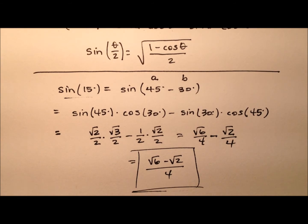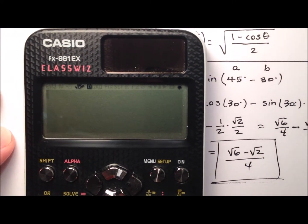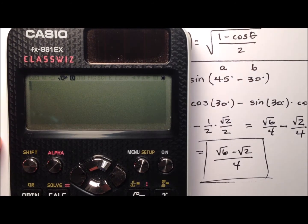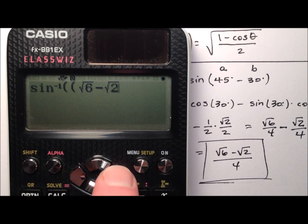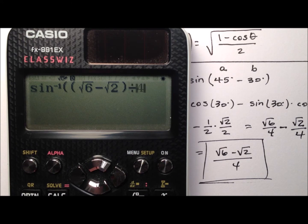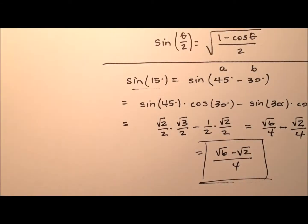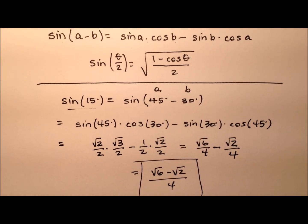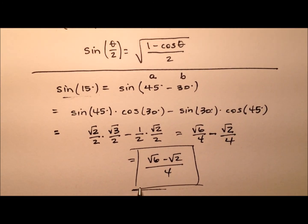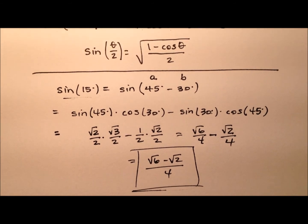Let's plug it into a calculator and verify that's correct. We're going to do the inverse sine of this ratio — the inverse sine of the numerator (√6 minus √2), close parentheses for the numerator, divide by 4, close the parentheses for the inverse sine, and we get 15 degrees. So we verify that worked out. That's the first way: using our difference formula for sine gives us sine of 15 degrees equals (√6 − √2) / 4.